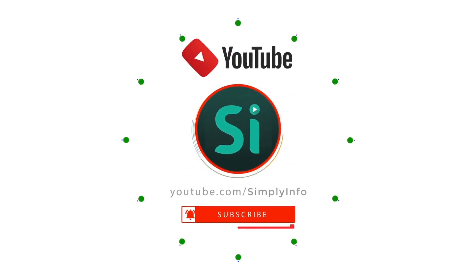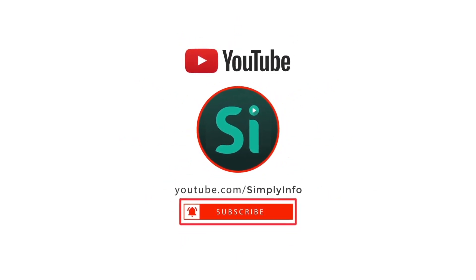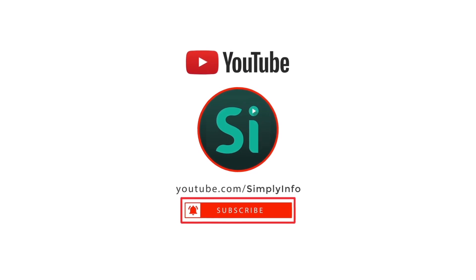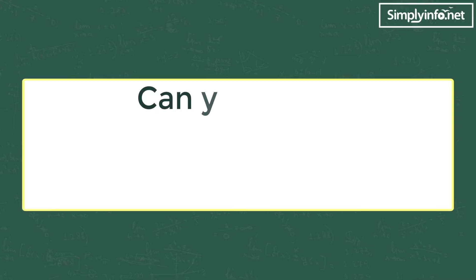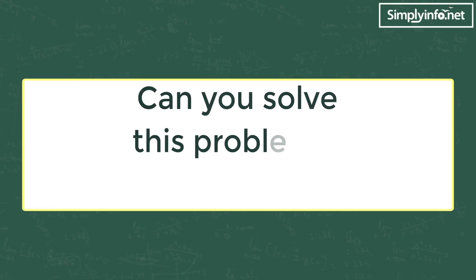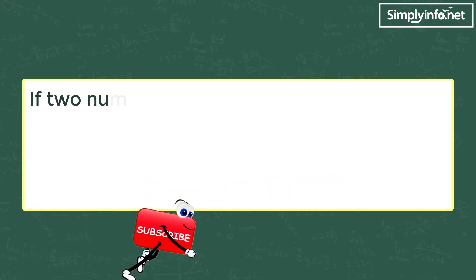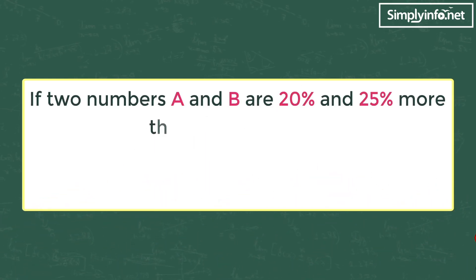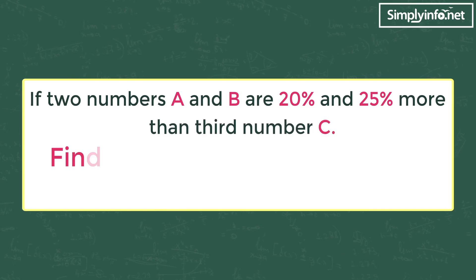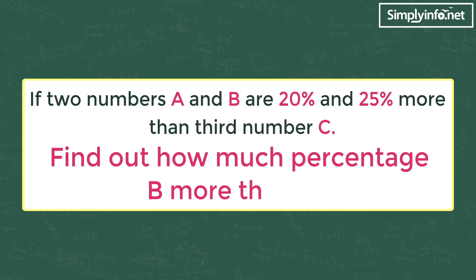Please subscribe for more videos and click the bell icon for updates. Can you solve this problem in three seconds? If two numbers A and B are 20% and 25% more than a third number C, find out how much percentage B is more than A.